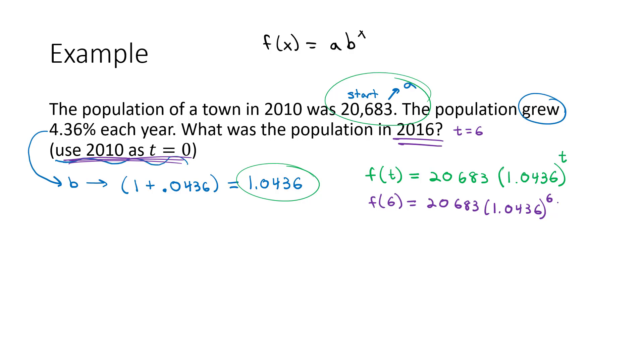So we go to our calculator, and just basically type this in. 20,683 times 1.0436 raised to the sixth power, and we get 26,700, and we'll round it to the nearest person, 19 people.